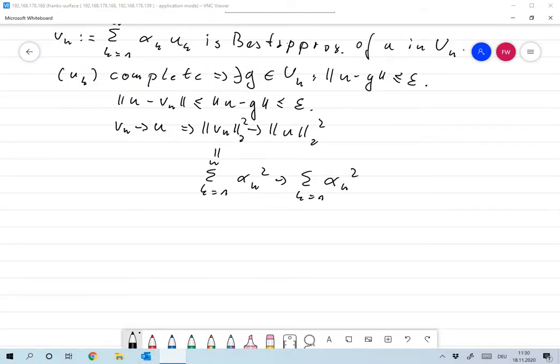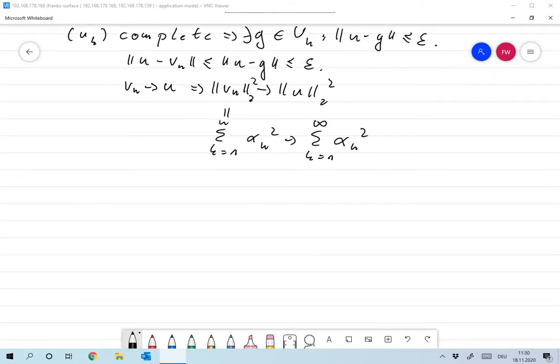Sum from 1 to infinity alpha N squared, and that exists due to Bessel's inequality. So we have that the sum over all K alpha K squared is nothing but the norm of U squared. And alpha K is the scalar product of U and UK.